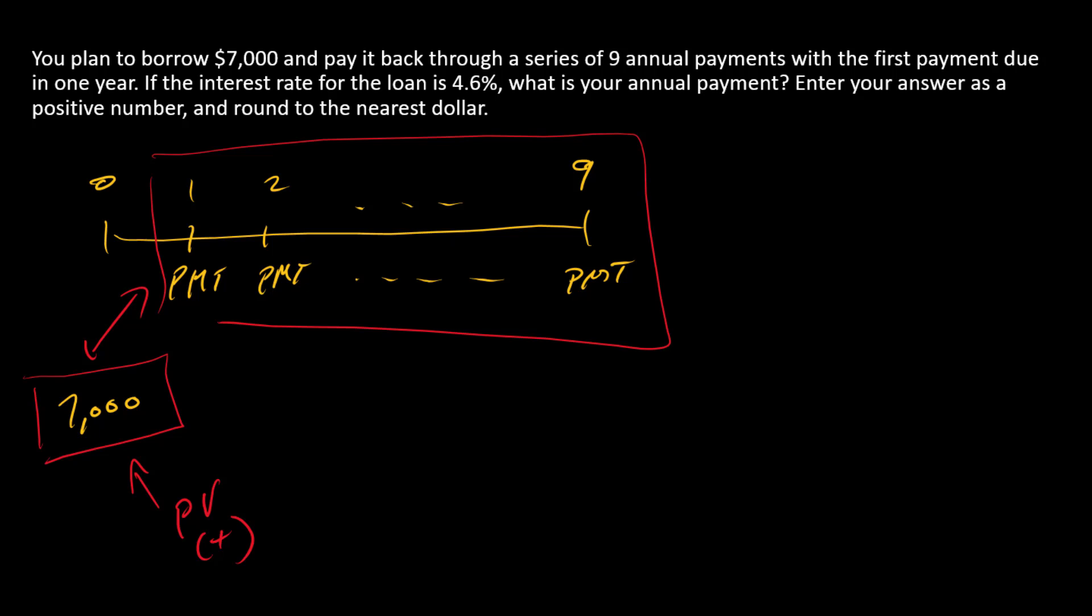The PMT, this is what I'm solving for. That's going to be a negative number because that's going the opposite direction as the loan proceeds. The proceeds are coming to me. The payment is going away from me to the bank.